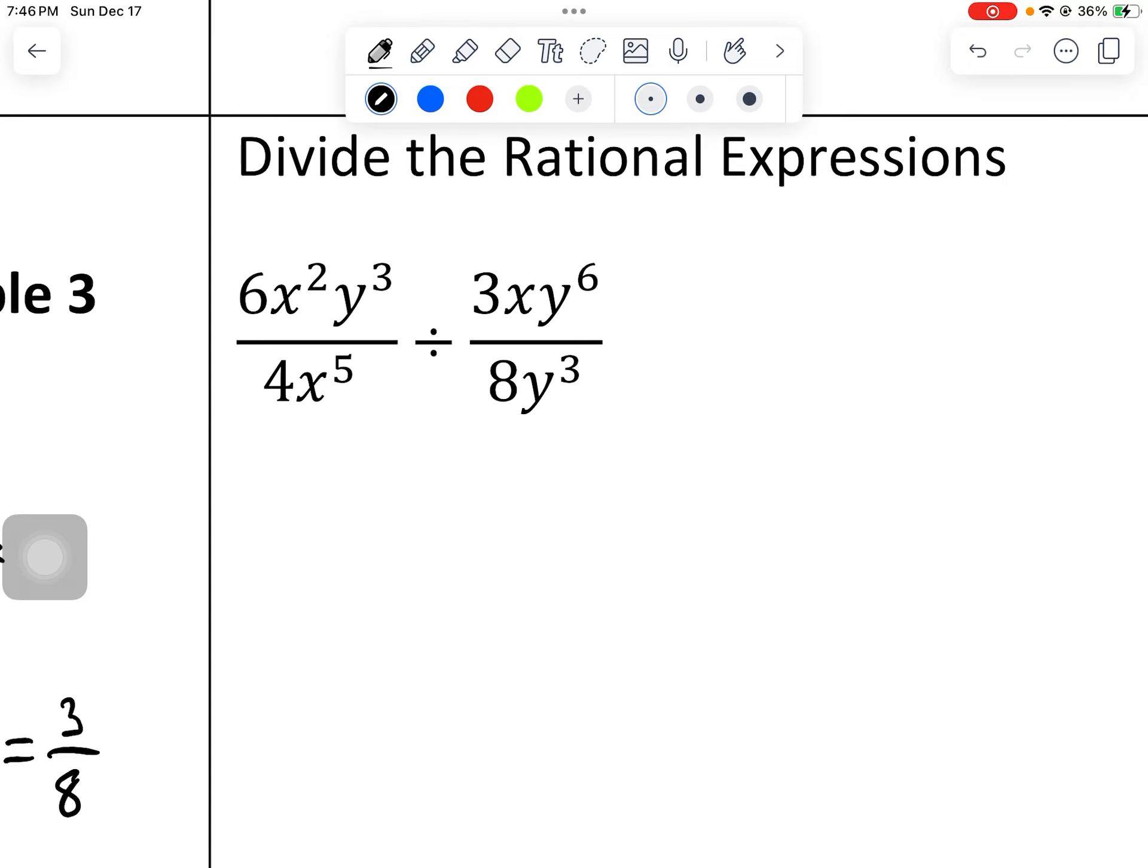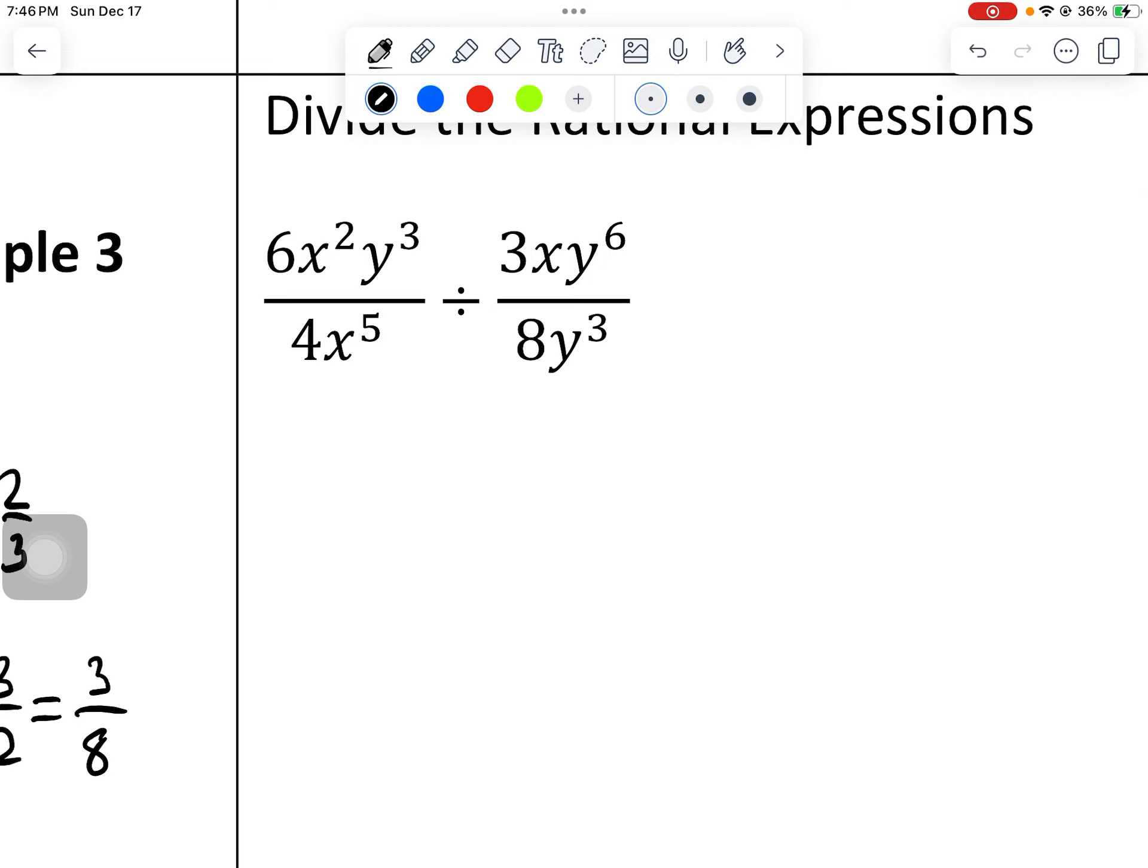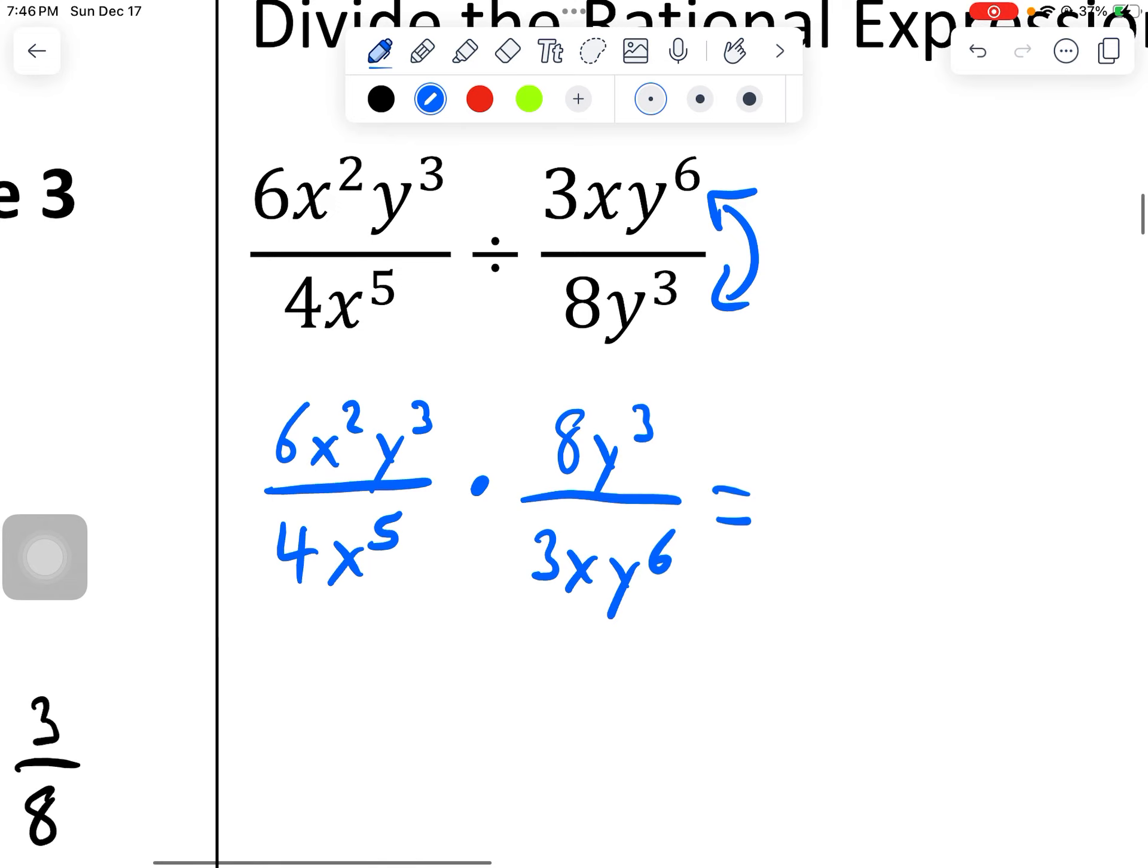So in this case, we just want to change this to multiplication. Let's keep that first fraction exactly the same. 6x squared y to the 3rd, 4x to the 5th. And now I'm just going to switch these two. I want to change this to multiplication. So 8y to the 3rd goes to the top, 3xy to the 6th.